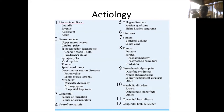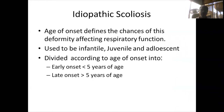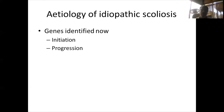Other causes include neurofibromatosis, congenital anomalies, soft tissue disorders such as Marfan syndrome, tumors, infections, trauma, osteochondral dystrophies, and metabolic disorders. The main focus here is idiopathic scoliosis, best classified by age of onset — either as infantile, juvenile, or adolescent, or more recently divided into early onset (before age five) or late onset (after that).